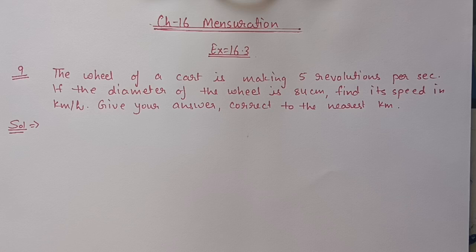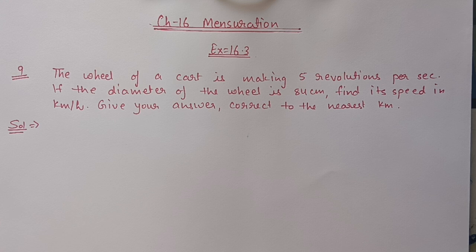Hello students, we are doing Chapter 16, Mensuration, Exercise 16.3. In today's video we will start from Question 9. The question is: the wheel of a cart is making 5 revolutions per second. If the diameter of the wheel is 84 centimeters, find its speed in kilometers per hour, giving your answer correct to the nearest kilometer.